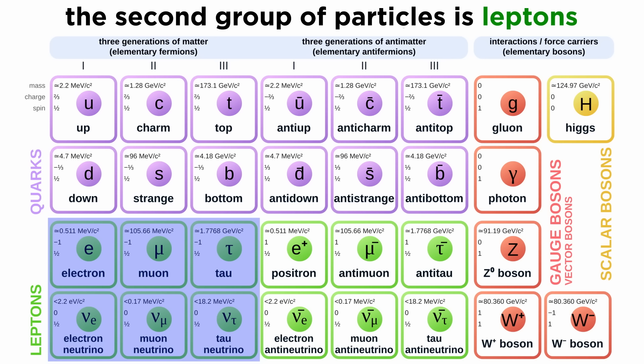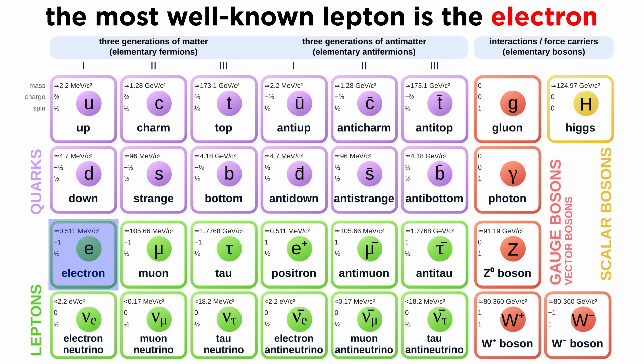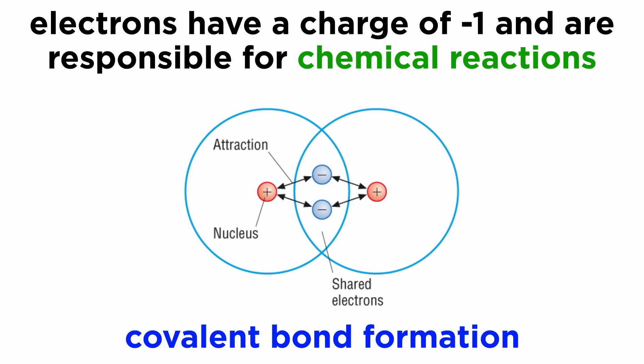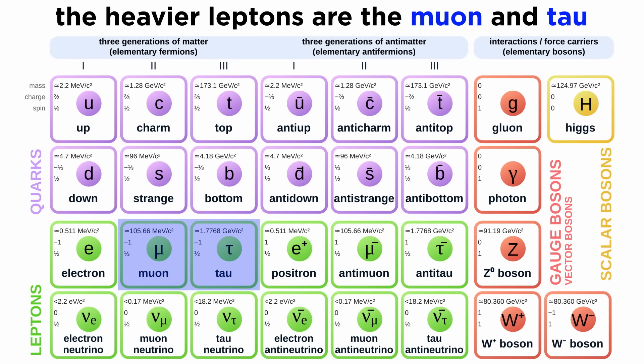The next group of particles in the standard model are leptons. The most well-known lepton is the electron, which is a first generation lepton. The electron has a charge of minus one and is present in chemical reactions, as it is one of the charged constituents of an atom or molecule. The heavier leptons are the muon and tau particles, which are very similar to electrons except for their masses, and these are second and third generation leptons respectively.